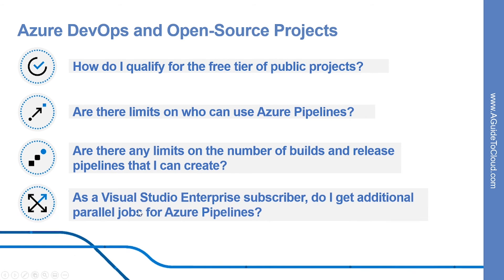Fourth question: as a Visual Studio Enterprise subscriber, do I get additional parallel jobs for TFS and Azure Pipelines? Yes, Visual Studio Enterprise subscribers get one parallel job in Team Foundation Server 2017 or later, and one self-hosted parallel job in each Azure DevOps service organization where they are a member.